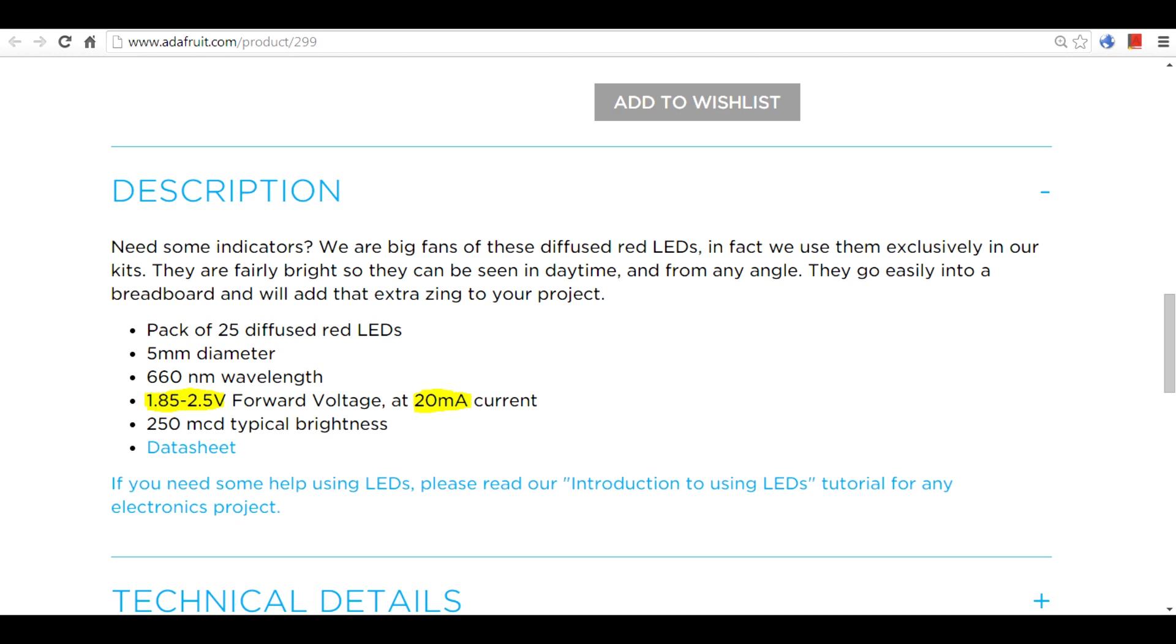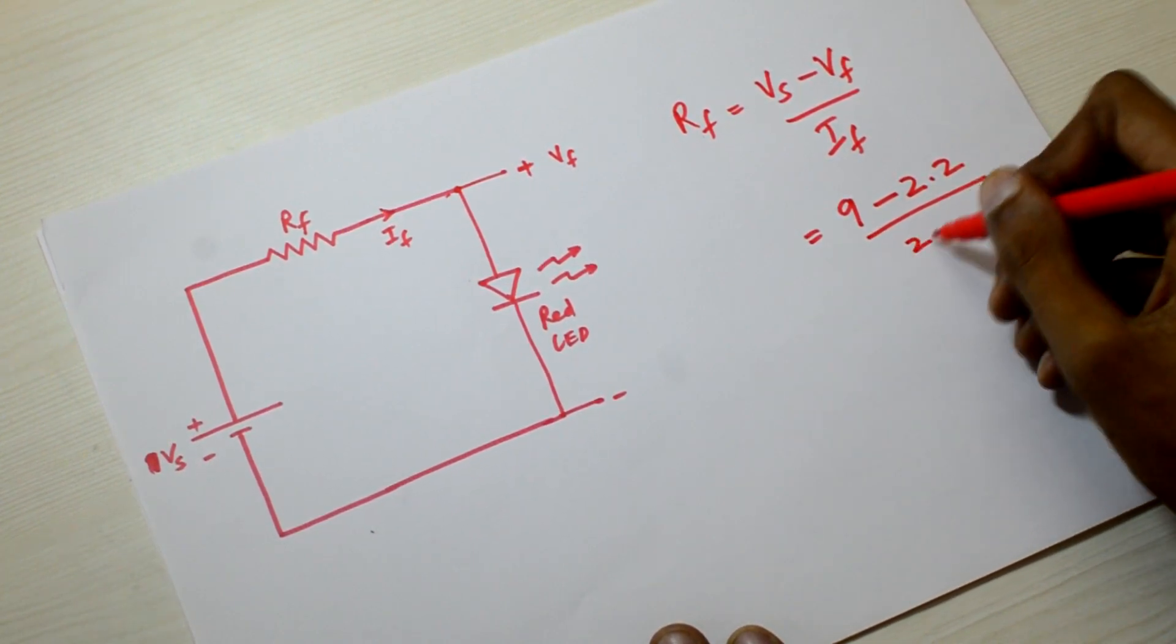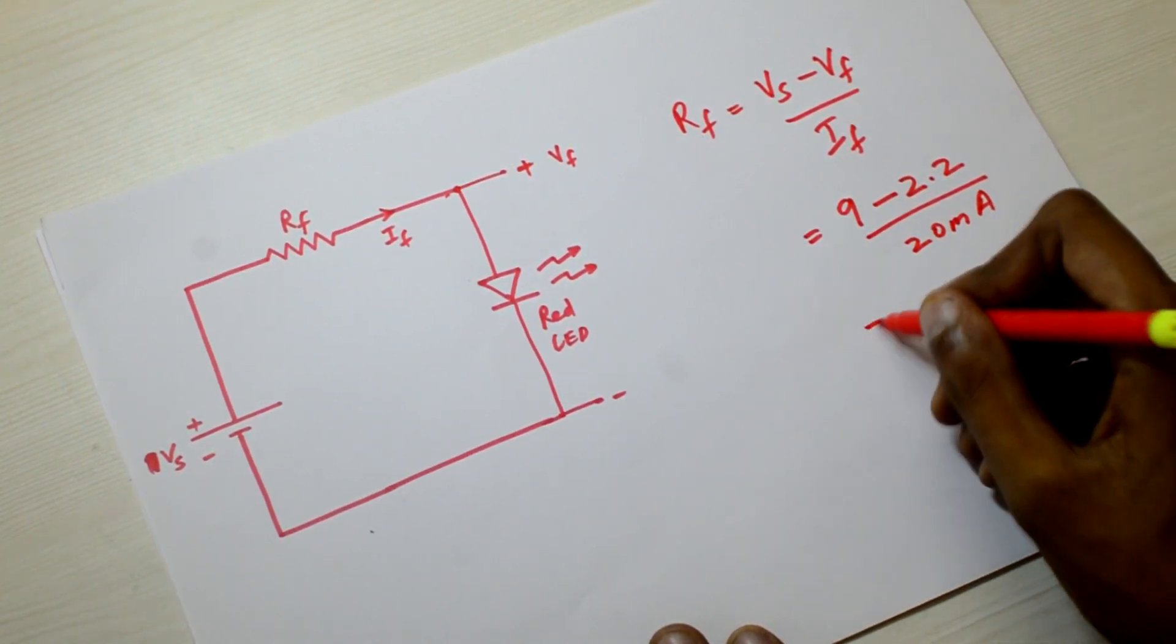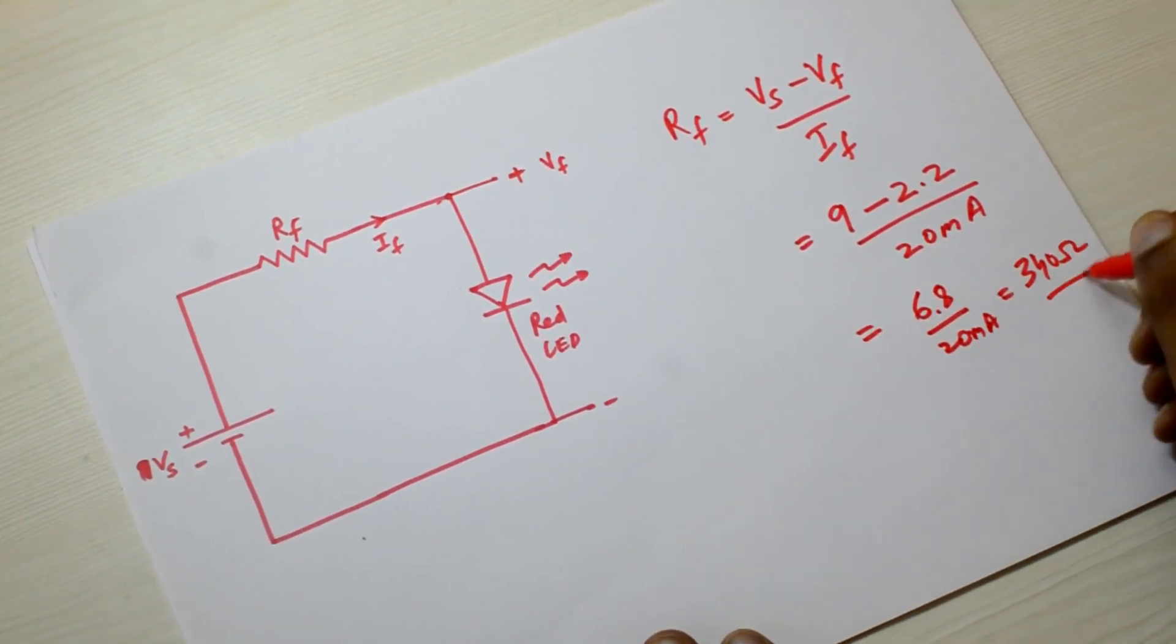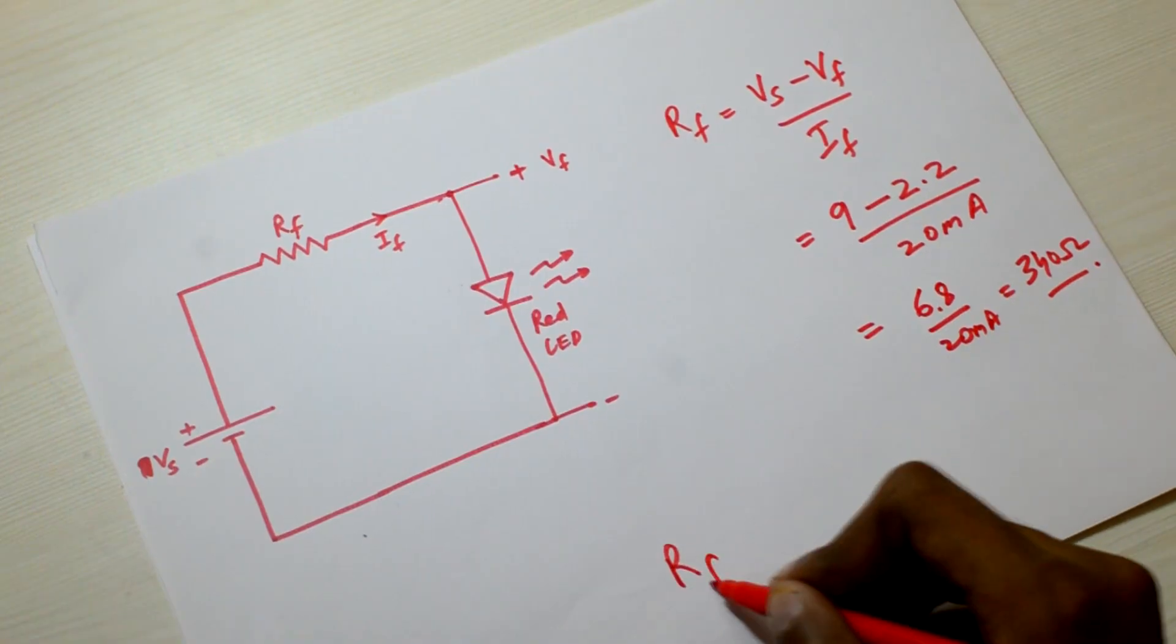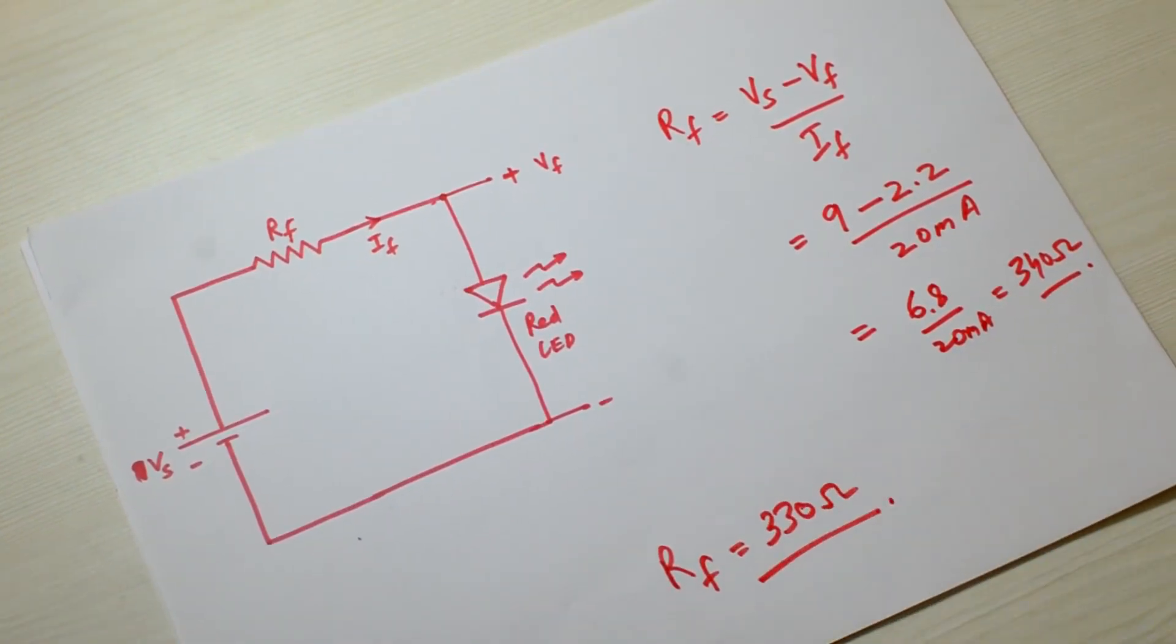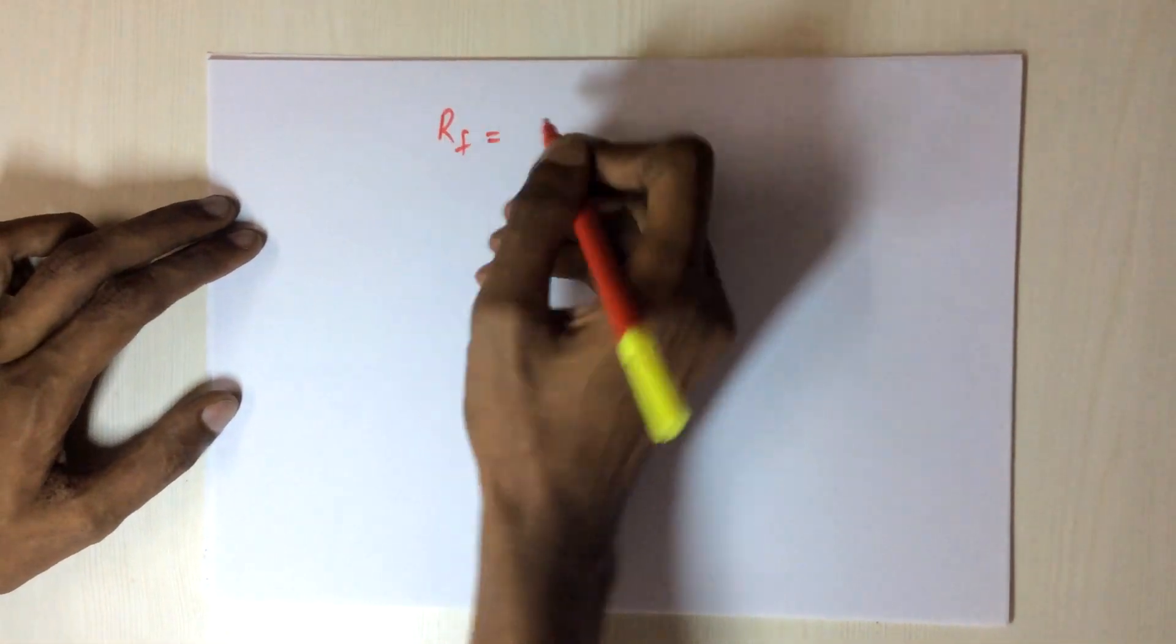For example, you can see that the optimal forward voltage is 1.85 volts to 2.5 volts at 20 milliampere of current. Let us take VF equal to 2.2 volts and IF equal to 20 milliampere. On further simplification you get RF is 340 ohms. Now let us look at the standard resistor chart. The closest you can find to 340 ohm is a 330 ohm resistor, hence we choose RF equal to 330 ohm.